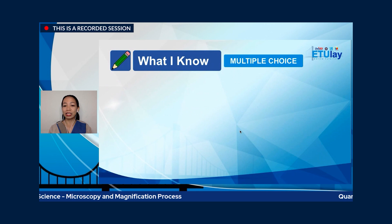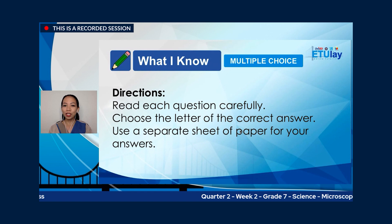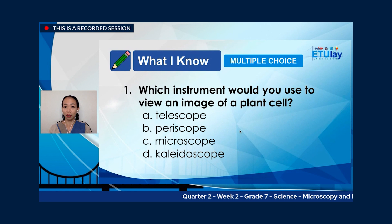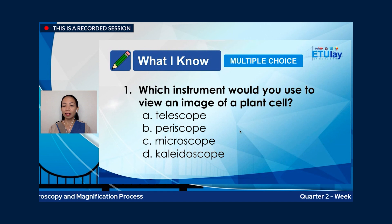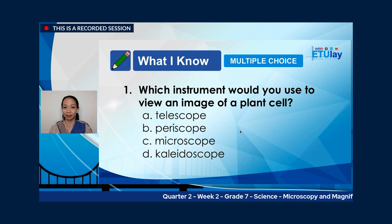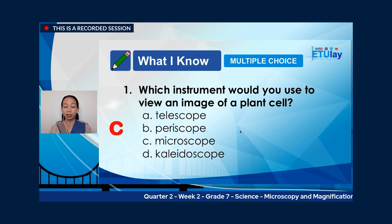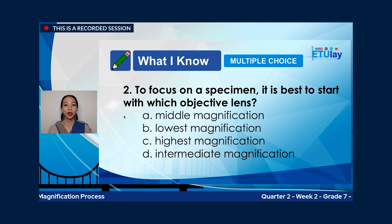This pre-test is in a multiple-choice format. Read each question carefully, choose the letter of the correct answer, and use a separate sheet of paper for your answers. Number one: which instrument would you use to view an image of a plant cell? A, telescope; B, periscope; C, microscope; or D, kaleidoscope? The correct answer is C, microscope. A telescope lets you view distant objects. A periscope lets you observe surroundings while remaining undercover, while a kaleidoscope consists of mirrors that reflect images of bits of colored glass in different geometric designs.